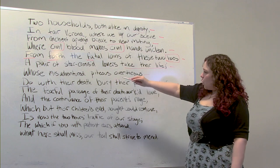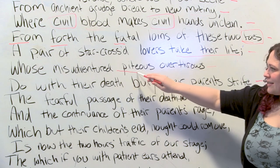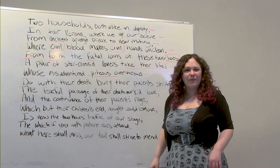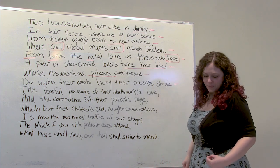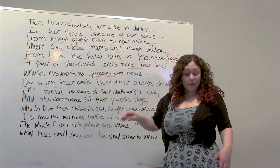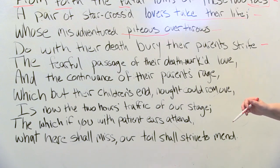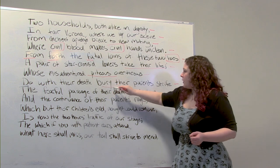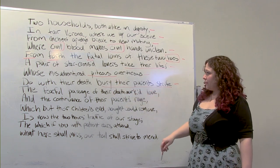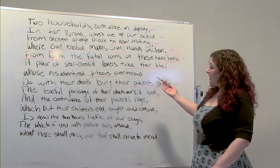'Whose misadventured, piteous overthrows do with their death bury their parents' strife.' I love the word 'piteous' — that nice plosive P sound. 'Misadventured' means there's going to be struggle; 'piteous overthrows' — they're trying to get together and they can't. 'Do with their death bury their parents' strife' — the only thing that is going to make the parents bury the hatchet is their children's death. So that also tells you: this is not a romantic comedy. The lovers are going to die. It's going to be sad.